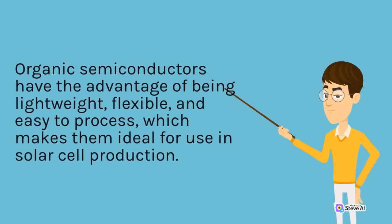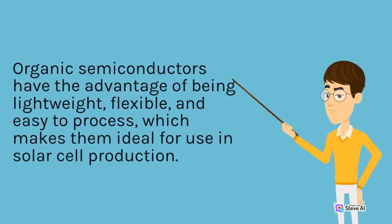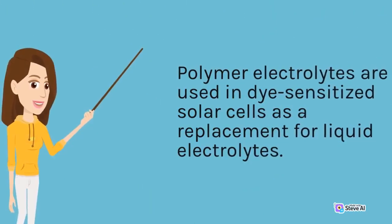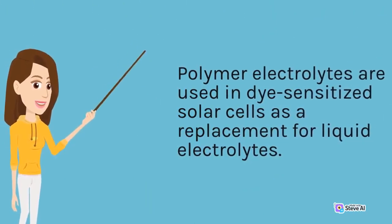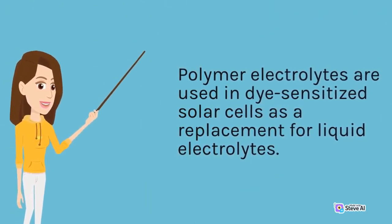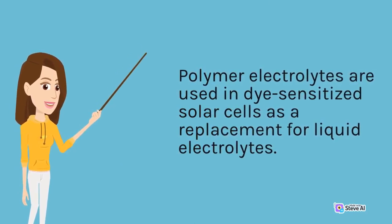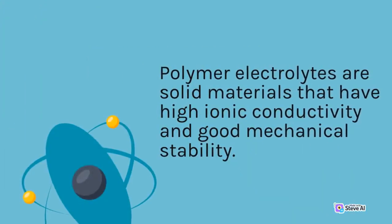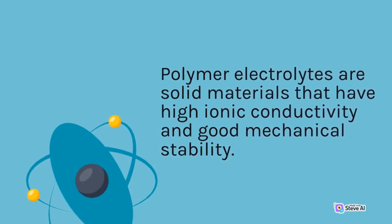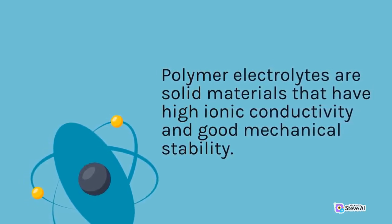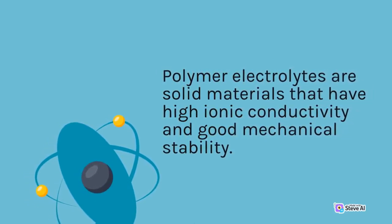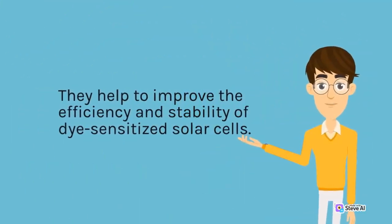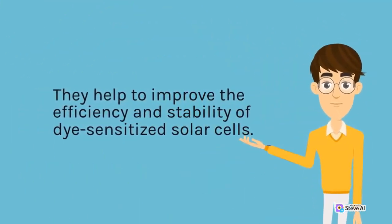Polymer electrolytes are used in dye-sensitized solar cells as a replacement for liquid electrolytes. They are solid materials that have high ionic conductivity and good mechanical stability, which makes them ideal for use in solar cell production. They help to improve the efficiency and stability of dye-sensitized solar cells.